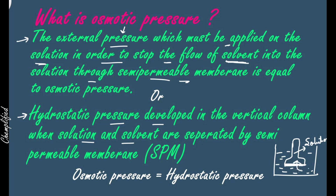The solvent particles will move into the column through the semi-permeable membrane, and the level of the solution will rise. The pressure developed in this vertical column when solution and solvent are separated is called hydrostatic pressure, and this hydrostatic pressure is equal to osmotic pressure.